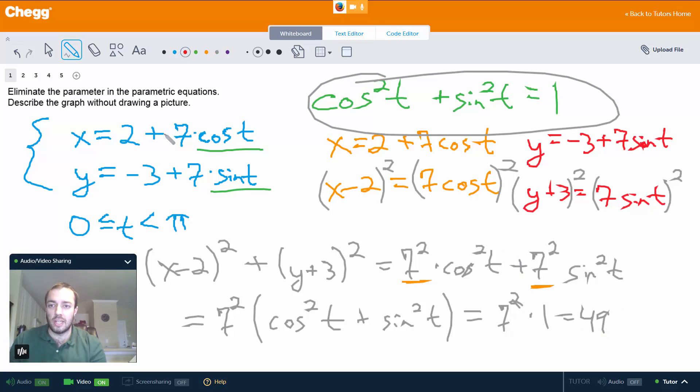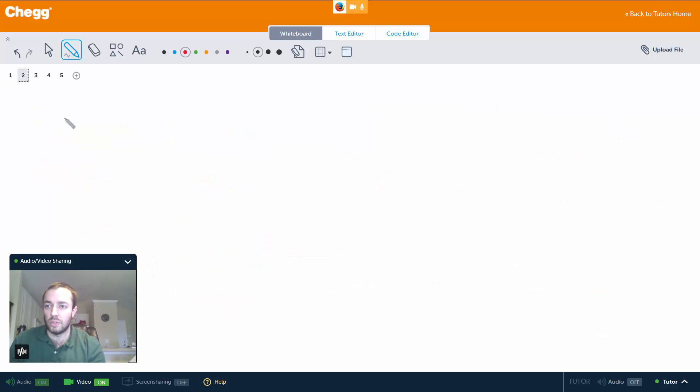So what we have just seen is that (x - 2)² + (y + 3)² = 49. So let's go ahead and write that on page 2.